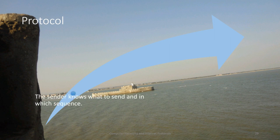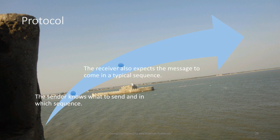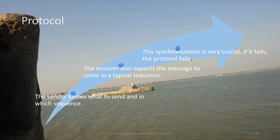Second, the sender knows exactly what to send — in a protocol you must know clearly which command to send. The receiver also expects commands to come in a typical sequence and no other way, so there is no ambiguity. Synchronization is very, very crucial — if synchronization is not proper, the protocol will fail. For example, if the sender is sending a customer ID and the receiver accepts it as the customer's account balance, the banking protocol is going to fail.